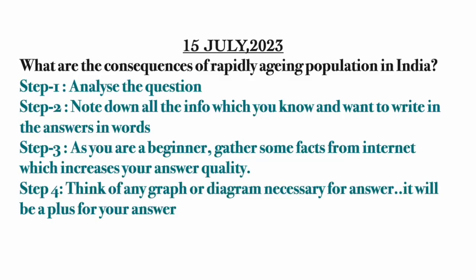The question is: what are the consequences of a rapidly aging population in India? In this question they are testing our extent of knowledge. If you only think about the positive aspects it is wrong, and if you only think about the negative aspects then also it is wrong. You have to write both positive aspects as well as the negative aspects.